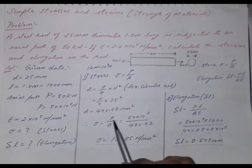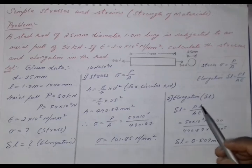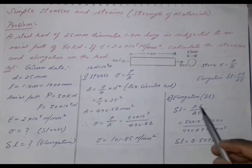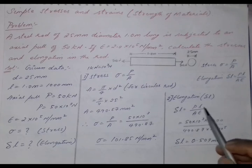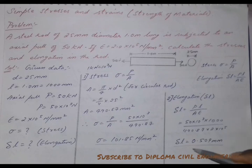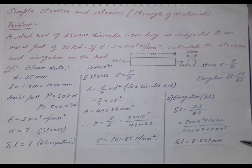Now the next part is we have to find elongation. We have direct formula for finding elongation, that is change in length, PL by AE. Therefore delta L equals 0.509 mm.